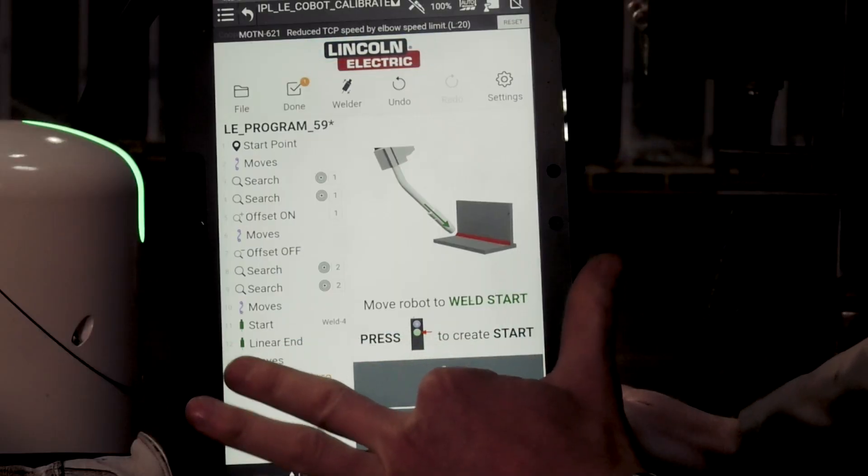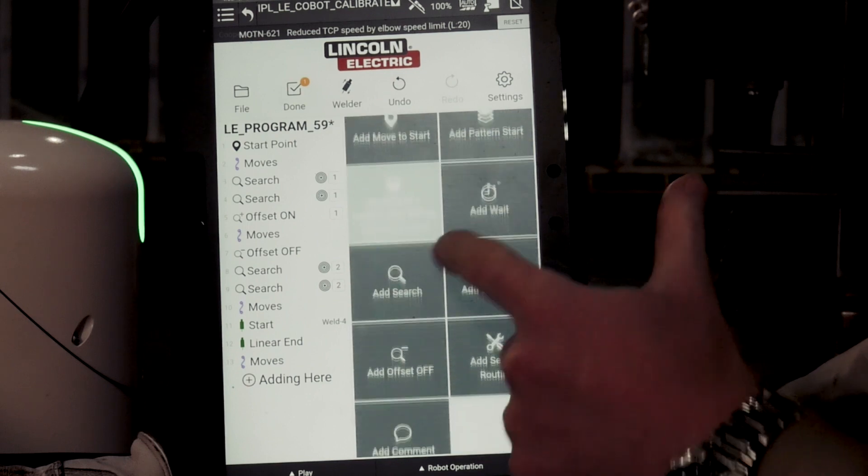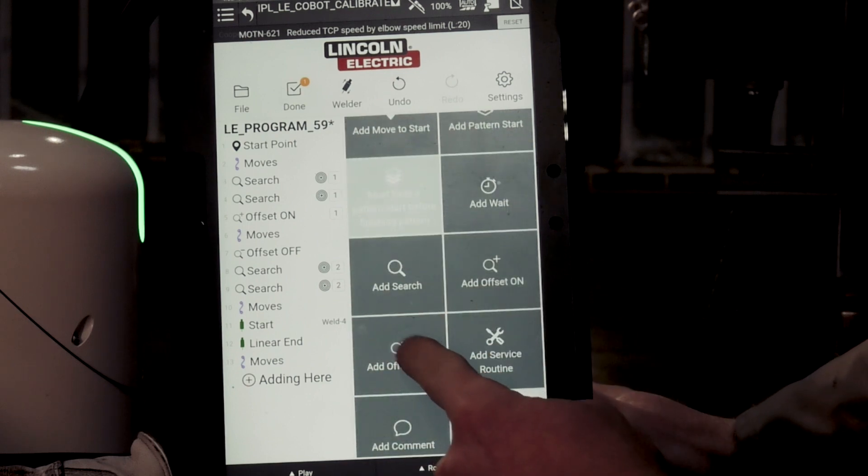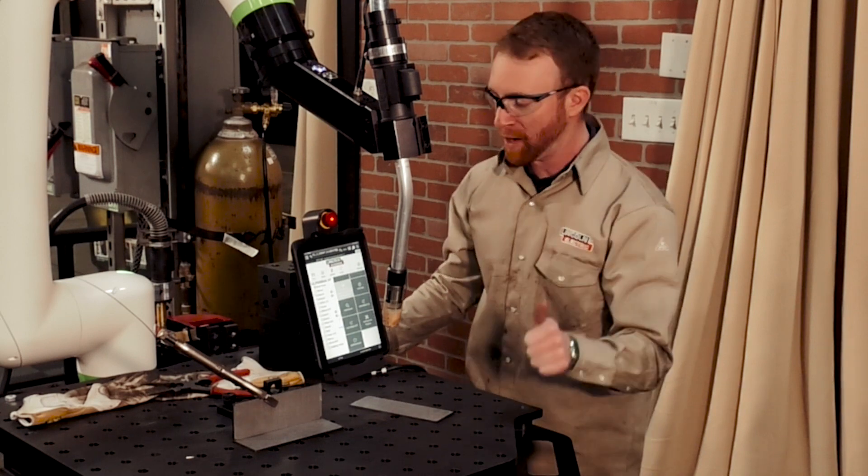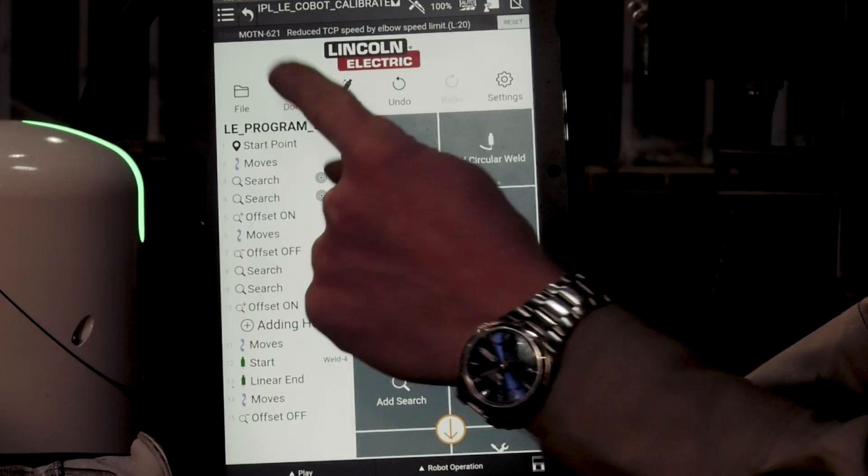Press the blue button because we're done. And then before we're done, remember we want to turn those offsets off. So we're going to go back to more choices, add offset off. Boom. So at that point, our job is done. We're ready to go. So all we have to do is press done.